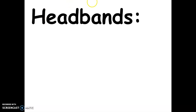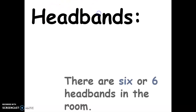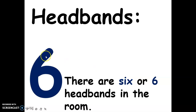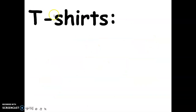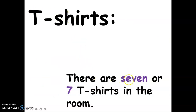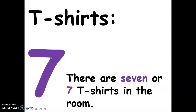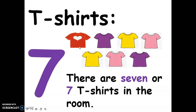Next, the headbands — there are six headbands in the room. This is the spelling of six, this is the numerical symbol for six, and these are her six headbands. Next, t-shirts — there are seven t-shirts in the room. This is the spelling of seven, this is the numerical symbol for seven, and these are the seven t-shirts.